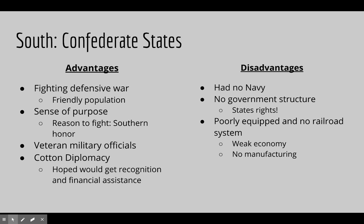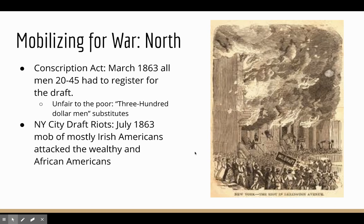The South also had a large number of veteran military officials known for their military strategy. Their expansive cotton economy allowed them to hope for assistance from places like Britain, since Britain was so dependent on Southern cotton. They hoped for recognition as an individual country and financial assistance. The downsides were no navy, no clear government structure, and despite electing Jefferson Davis as president, they never established a strong federal government due to their commitment to states' rights. They were poorly equipped with no strong railroad system and an economy based only on cash crops with almost no manufacturing.